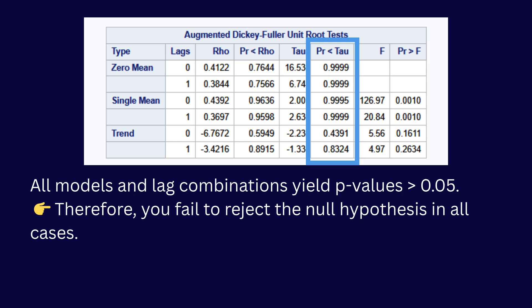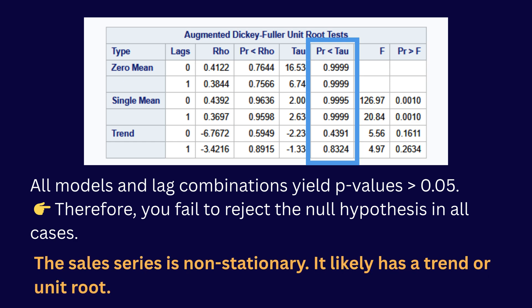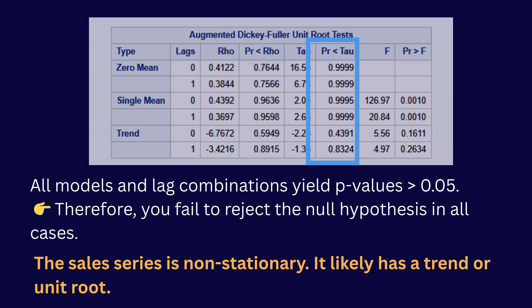Therefore, we fail to reject our null hypothesis for all cases. So the sales series is non-stationary. It likely has a trend or unit root.